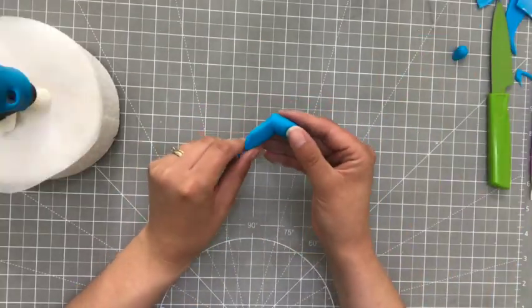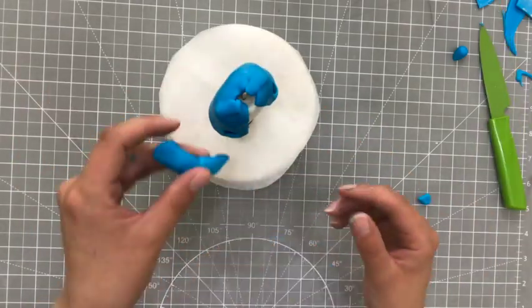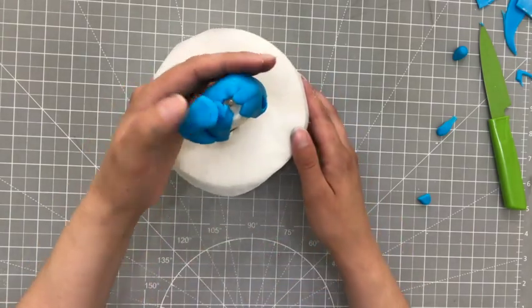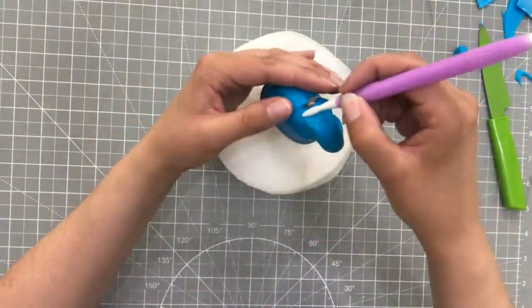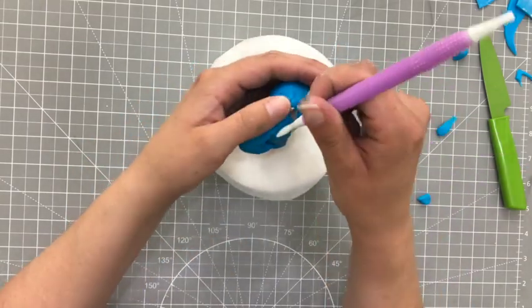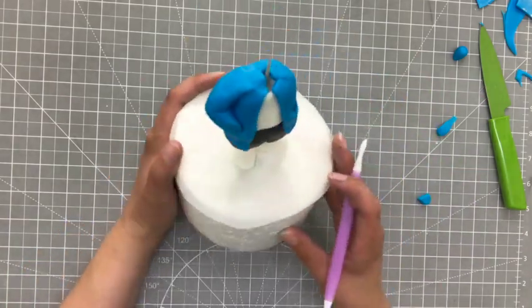His arms are super basic. I roll out a cord of more of that blue modeling paste and I'm just going to keep it thinner at one end. And then I just bend in an elbow and then attaching it was a bit difficult with the hands in the pockets. It took me a while to get it so that it looked like it was in a natural position. I do a little blending on the shoulders.